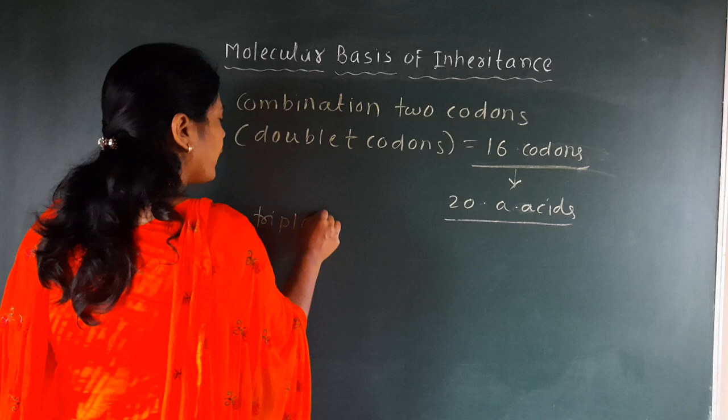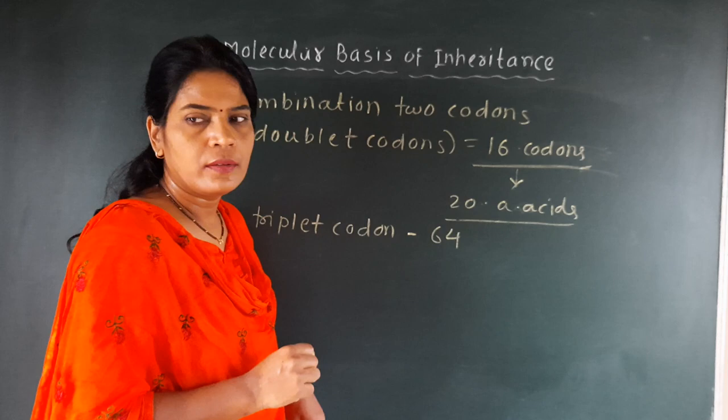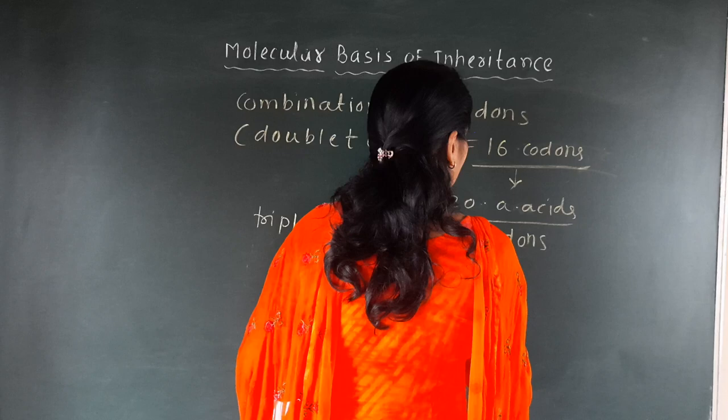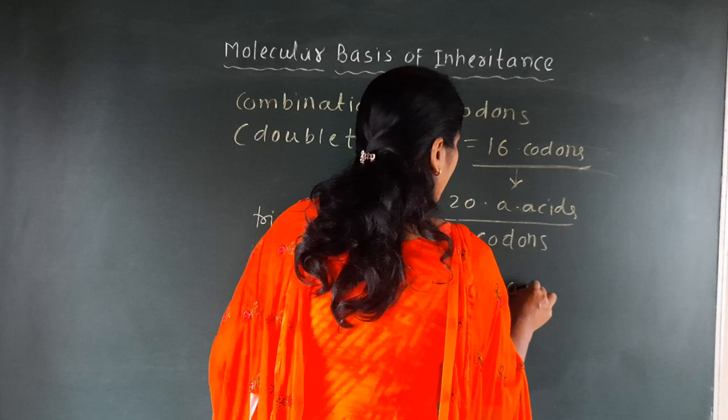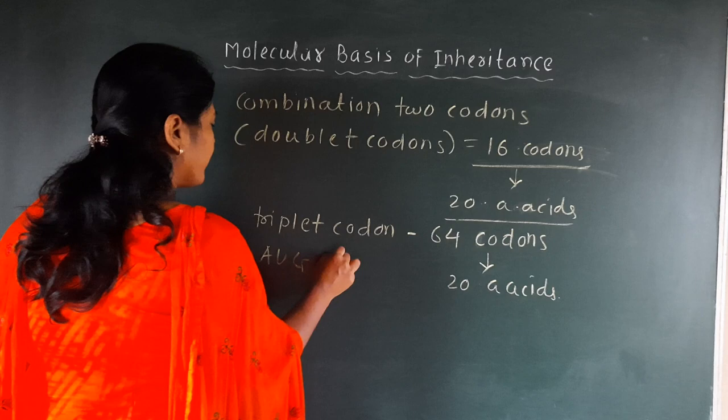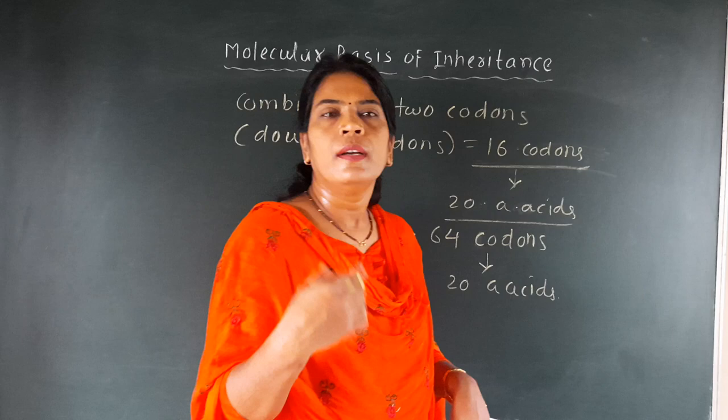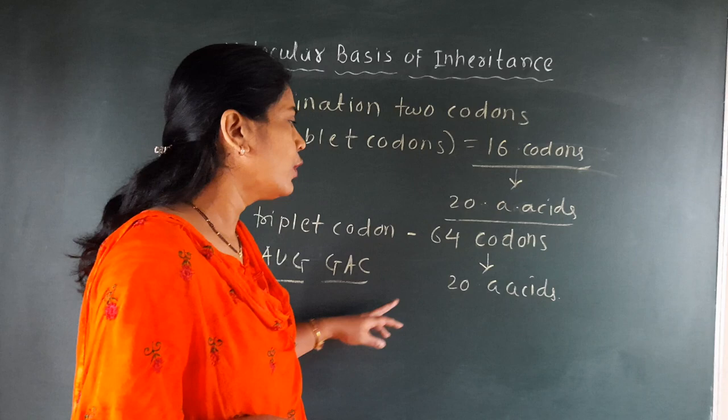It says that triplet codons will form 64 codons, and these 64 codons specify the 20 amino acids. That means, if we take the codons A, U, G, C like this, the triplet codons in combination form 64 codons, and these 64 codons will code for the 20 amino acids.